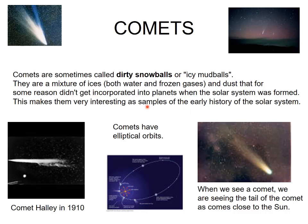This makes comets very interesting as samples of the early history of the solar system. Comets have elliptical orbits. There is a very important comet called Halley's Comet, first documented in 1910 when it was explored by the astronomer Halley.